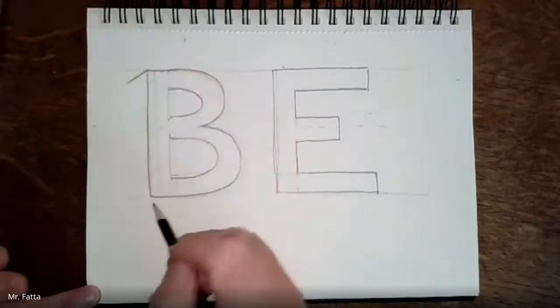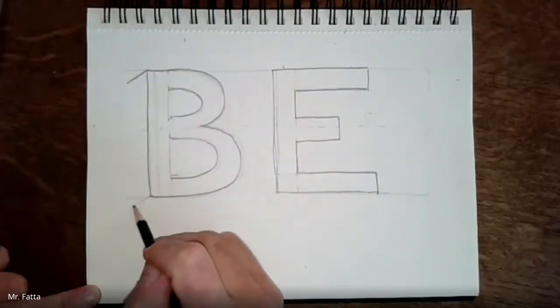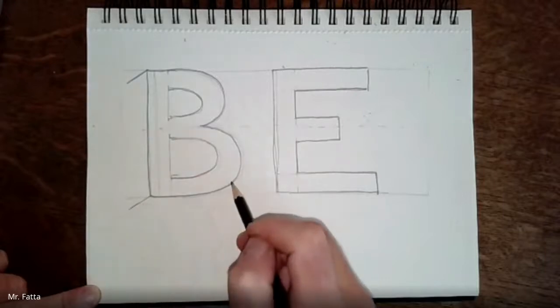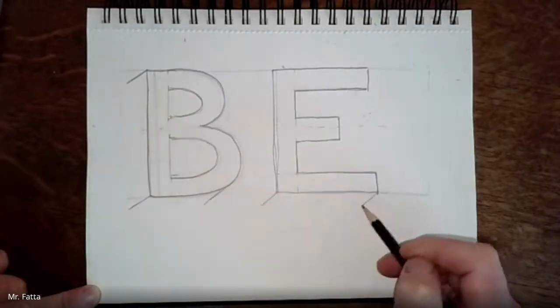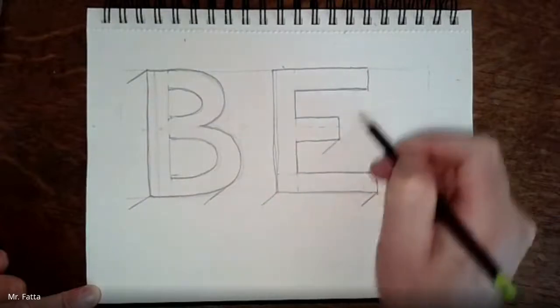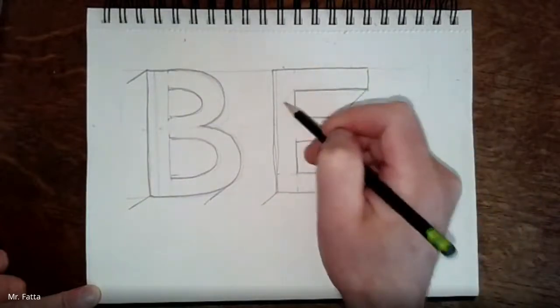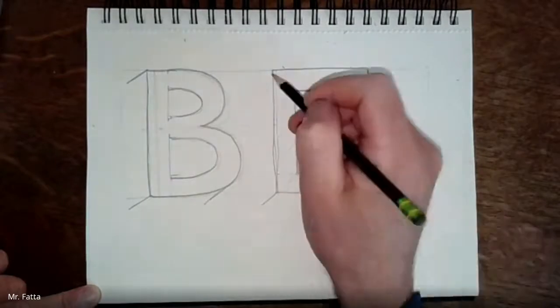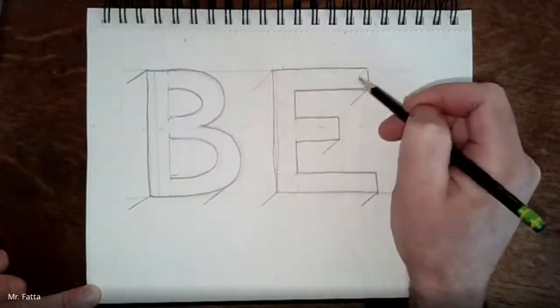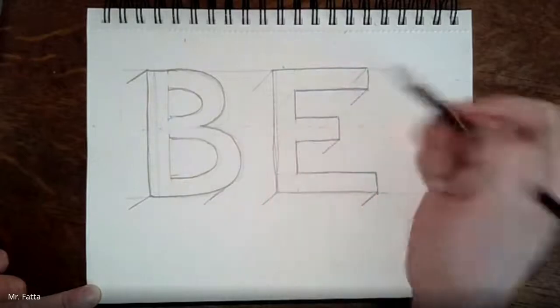So now I'm going to do the isometric effect to it. So each corner and each edge gets this 30-degree angle pointing out. Now I'm just doing every corner, every edge, even these ones in here, just so I could see the 3D effect. And sometimes I need that line to help me draw other lines.